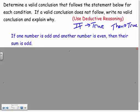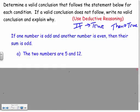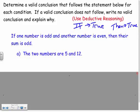So here's my if-then statement. If one number is odd and the other number is even, then their sum is odd. Okay, and that works. But now let's look at an example and decide if it's valid or not. The two numbers are 5 and 12. Well, let's take a look. 5 is odd. 12 is even. So that's true.